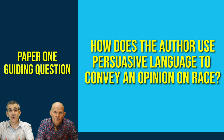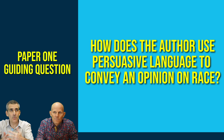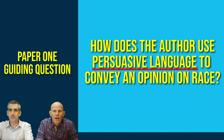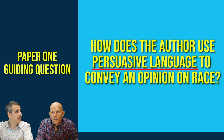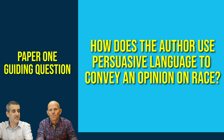This is paper one, so I know there's got to be a guiding question — I must answer the guiding question. Students and teachers, remember we did an earlier video about 10 tips for paper one; you might want to refresh your memory on those aspects because we'll be implementing them today. The guiding question is: how does the author use persuasive language to convey an opinion on race? The first thing I tell my students to do is highlight key words. The technical and formal element is persuasive language, and we also have to think about how he uses that to convey an opinion on race.